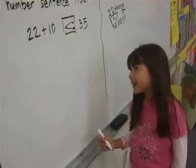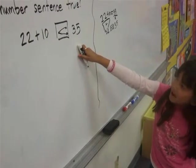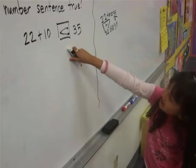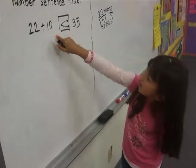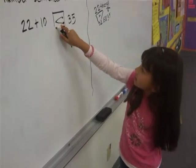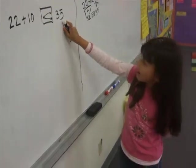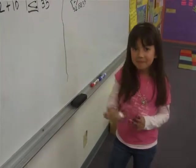And that's how you do the math. So 22 plus 10 is less than 35. Bye.